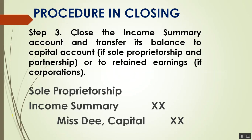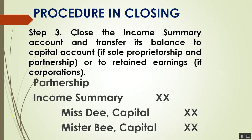Step 3 is to close income summary. If revenue is higher than expenses, we have net income, meaning the income summary has a higher credit balance. To close it, debit Income Summary and credit the capital account. For sole proprietorship and partnership, income summary is closed to the capital account.